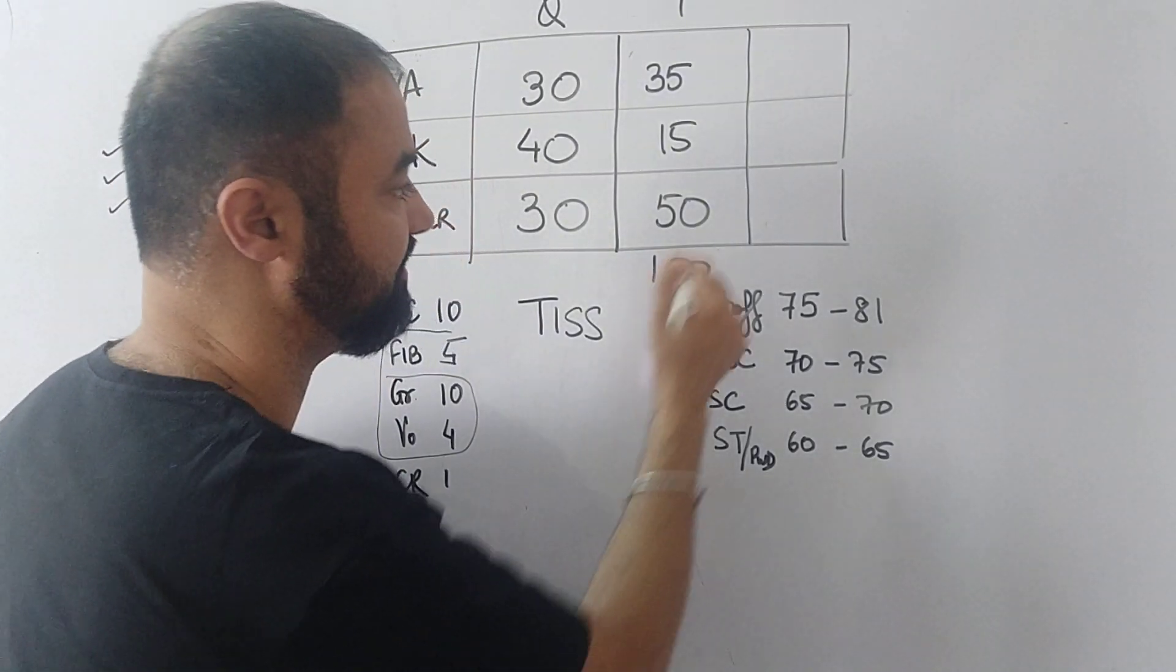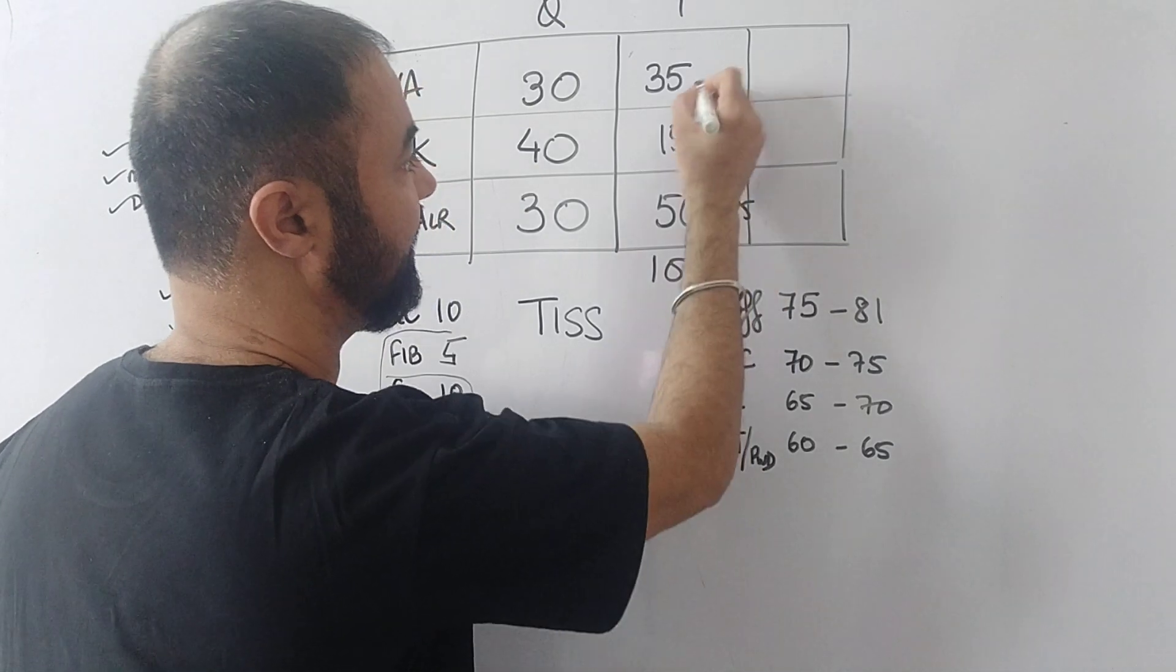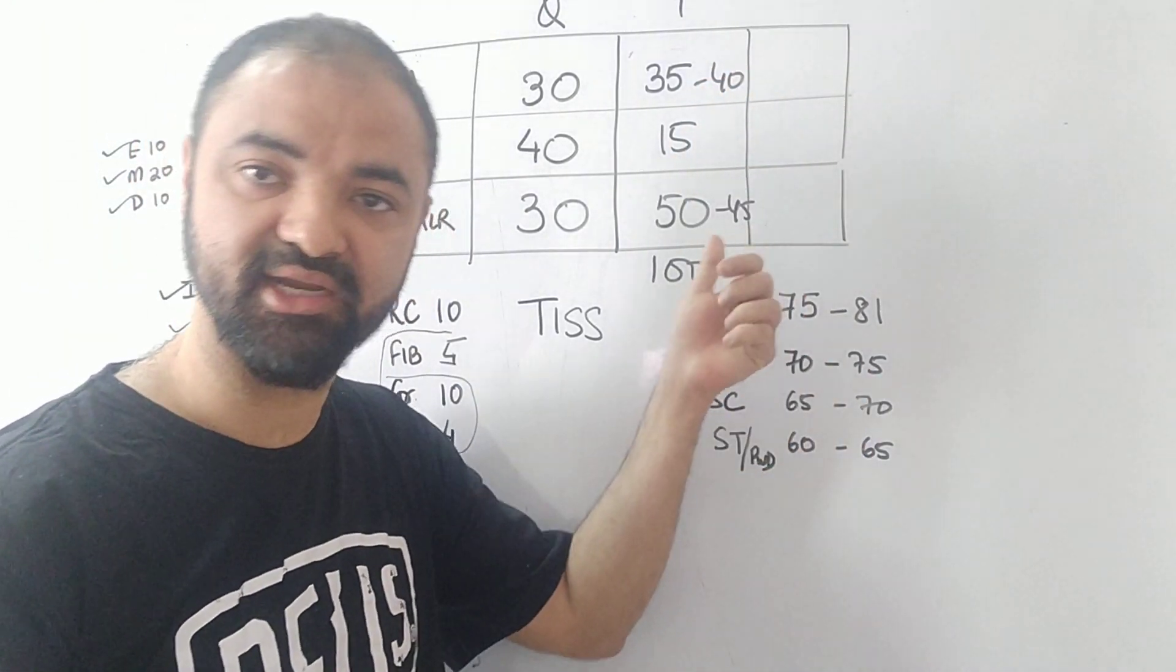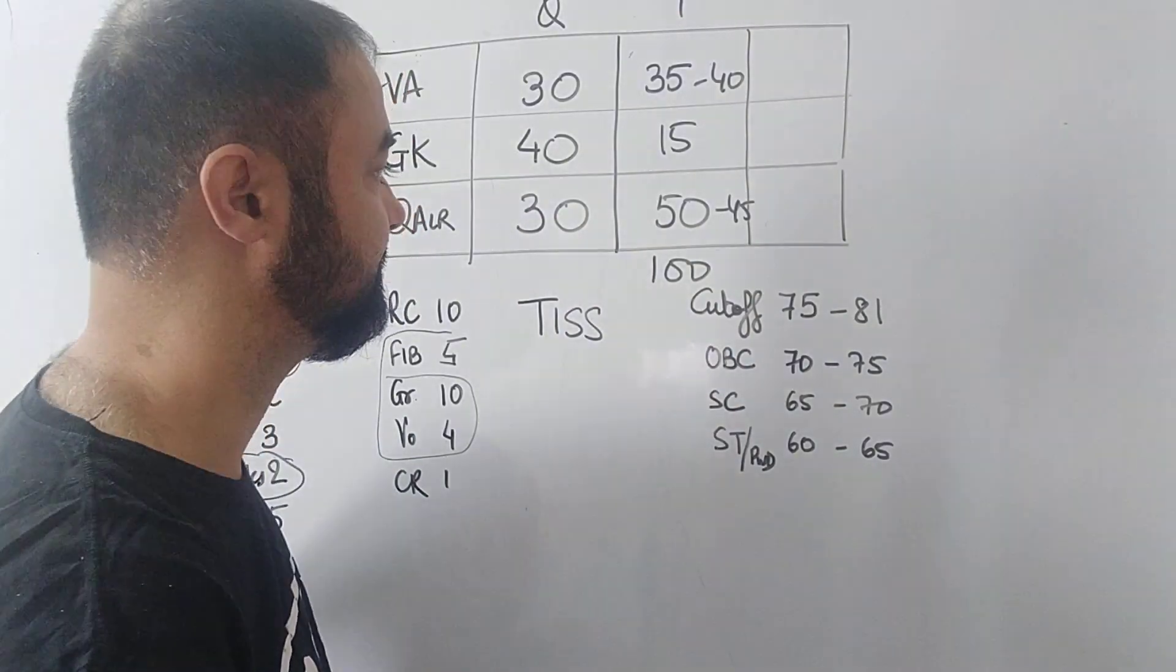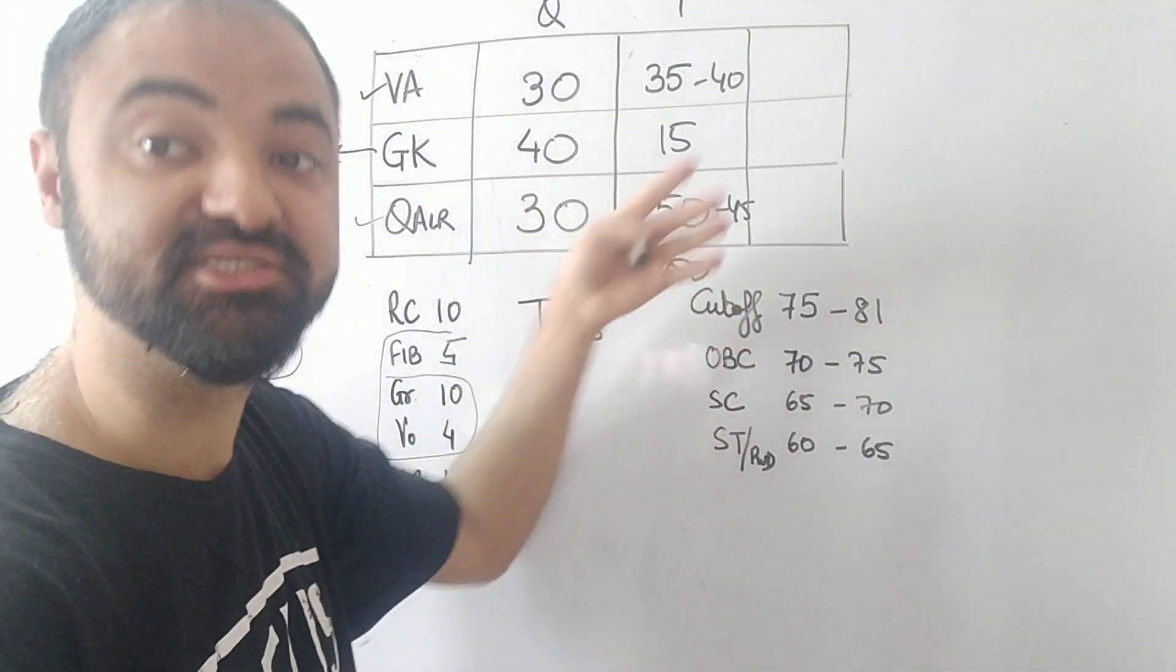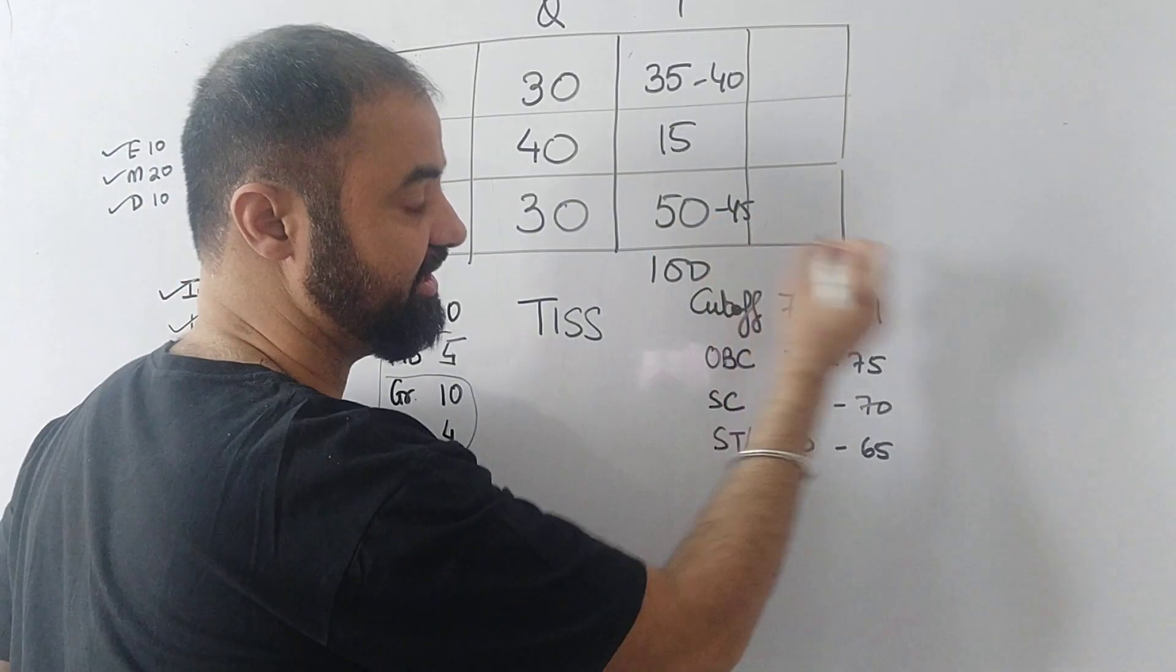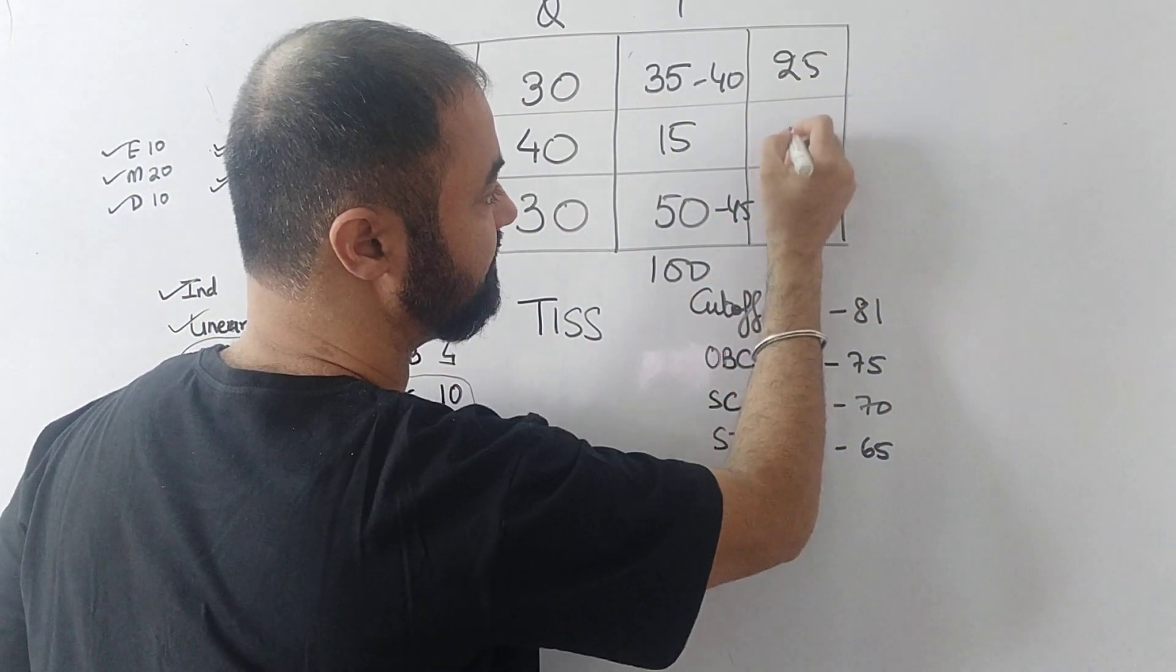You can decide - suppose your verbal is very strong, quant is very strong, speed is very good, you can spend less time. So maybe I can do 45 here and maybe 40 here. You have to decide - give a few mocks and then decide how much time you want to spend in which section. And in every mock you have to attempt minimum 25.